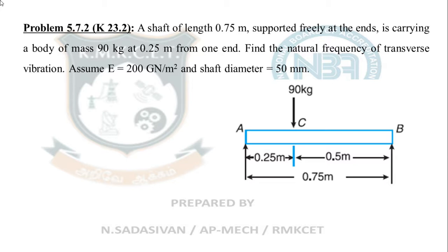Find the natural frequency of the transverse vibration. Assume Young's modulus 200 GN/m², shaft diameter 50 millimeter. That is your question and the diagram. This diagram is not necessary to solve the problem. Diagram will not be given in the exam. This you have to draw. Just by reading the question, you can draw this.